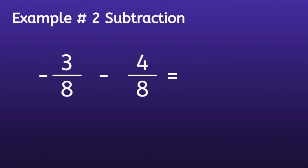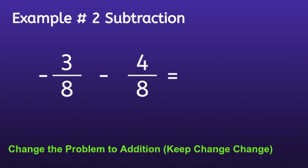Example number two — subtraction: negative 3 eighths minus 4 eighths. Just like the last problem, we can change this into an addition problem using 'keep change change.' Which means we keep the negative 3 eighths the same, change the minus sign into a plus sign, and take the opposite of the last number. So what is the opposite of a positive 4 eighths? Negative 4 eighths. And now we have an addition problem.